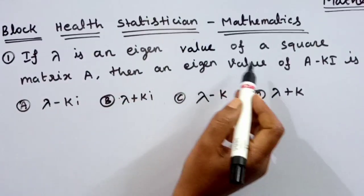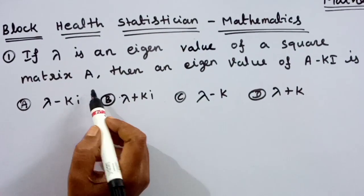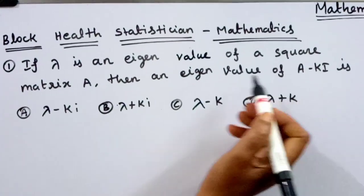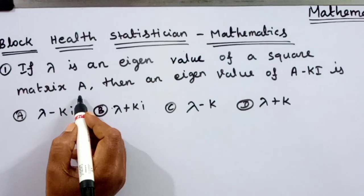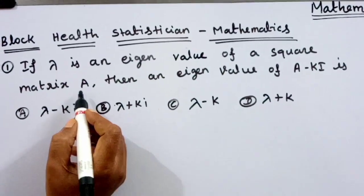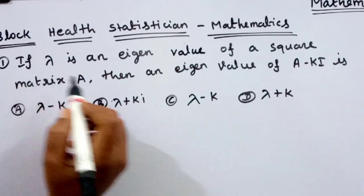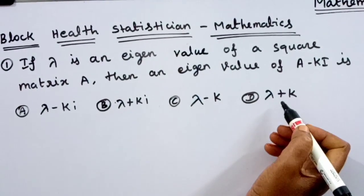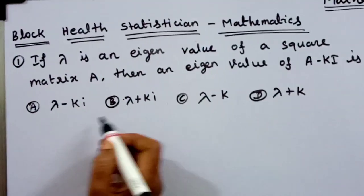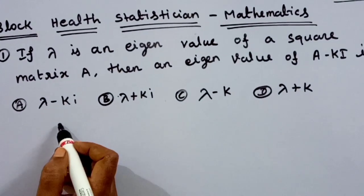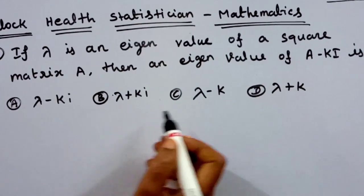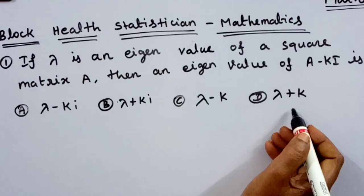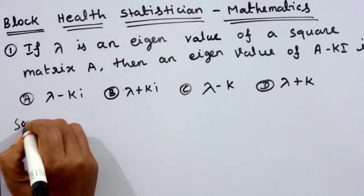If lambda is an eigenvalue of a square matrix A, then what is an eigenvalue of A minus k? A is a square matrix and lambda is the eigenvalue. We have four options: first option is lambda minus k, second option is lambda plus k, third option is lambda minus k, and last option is lambda plus k. We will discuss the solution.